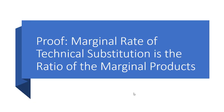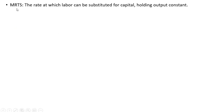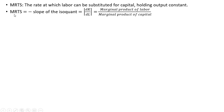This video will do a proof showing that the marginal rate of technical substitution is the ratio of the marginal products. The marginal rate of technical substitution is the rate at which labor can be substituted for capital, holding output constant. The marginal rate of technical substitution equals negative the slope of the isoquant, where k is placed on the y-axis, l is placed on the x-axis, and we're going to show that equals the marginal product of labor divided by the marginal product of capital.